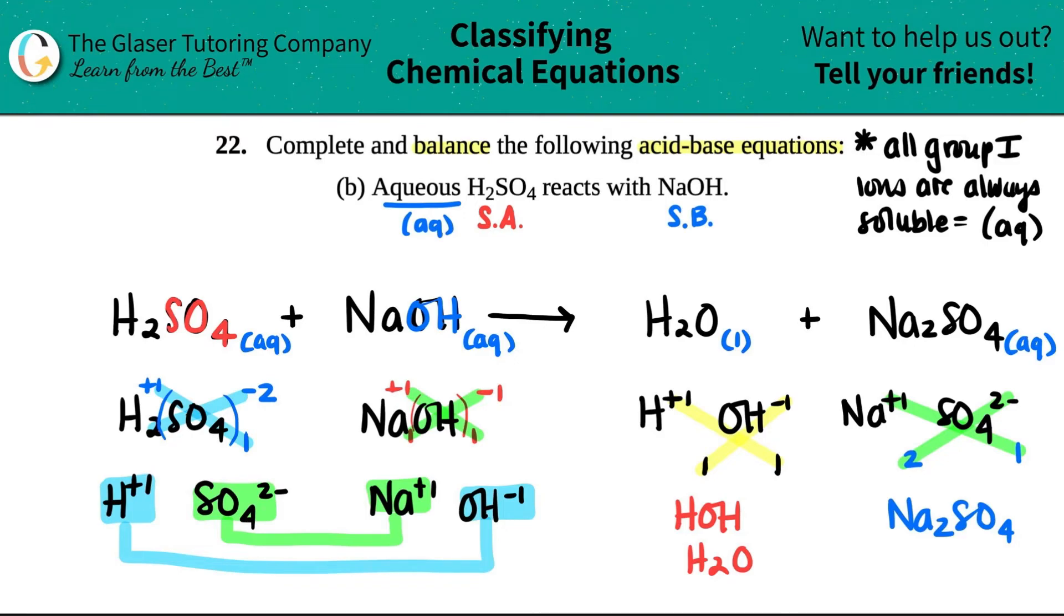The first thing that I noticed, though, that's different is I have one sodium here, right? But I have two sodiums here. So I need to correct that. What number would I put in front to get a two? Definitely a two, right? So I have two sodiums and two sodiums.